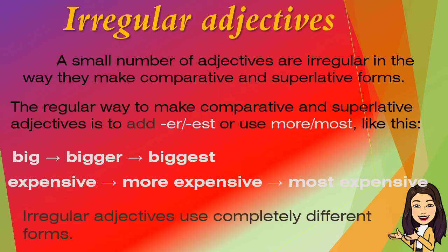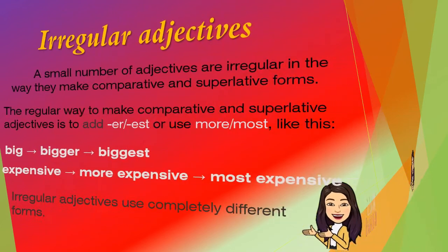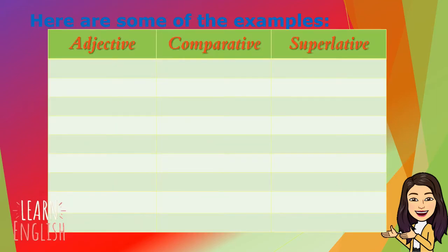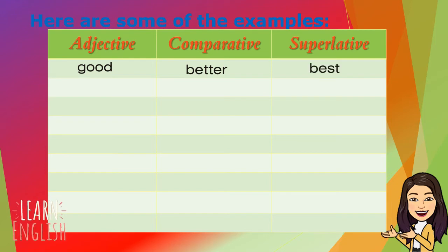Irregular adjectives use completely different forms. Here are some examples that show the degrees of irregular adjectives — the positive, comparative, and superlative. Good, better, best.